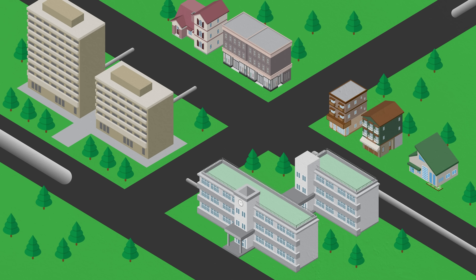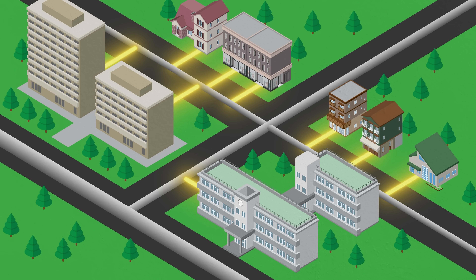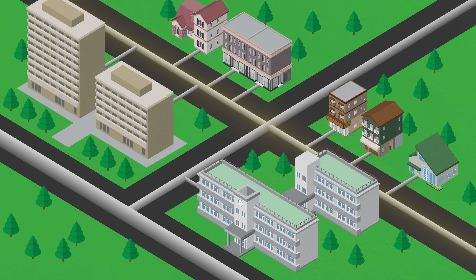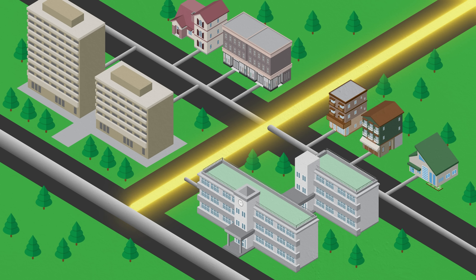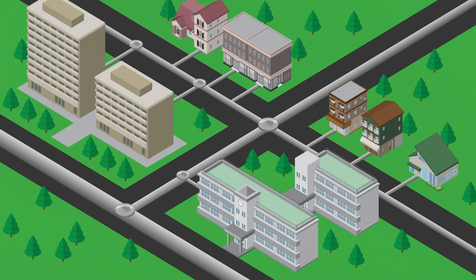Sewer networks have a tributary structure. Gravity carries waste along downward-sloping pipes that converge and concentrate into larger and larger lines, like a big underground river system, but grosser. Terminology varies place to place, but in general it goes like this: pipes that service individual buildings are usually called laterals, and those servicing particular streets are branches. Larger pipes that collect wastewater from multiple branches are called mains or trunk sewers, and the most significant lines furthest downstream are usually called interceptors. And connecting each one is a manhole.